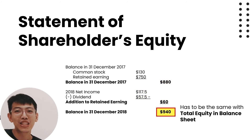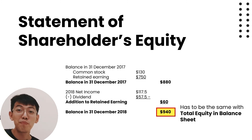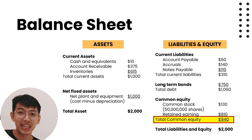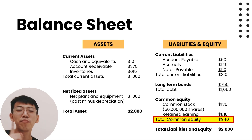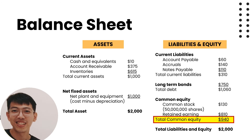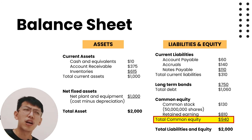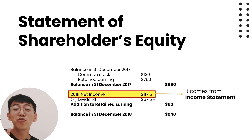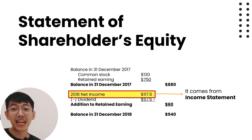The ending balance of equity equals beginning equity plus net income minus dividend: 880 + 117.5 − 57.5 = 940 dollars. This 940 dollars matches the total equity shown in the balance sheet — if these numbers don't match, something is wrong in your financial report. Net income comes from the income statement, which we will learn next.